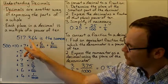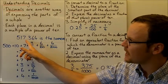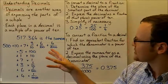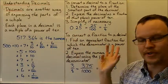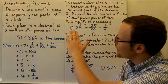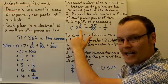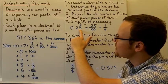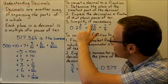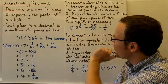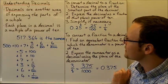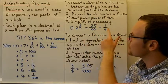We express the decimal as a fraction of that place's power of 10. For example, with 0.25, the smallest place value is the hundredths, so we express it as 25 over 100 — 25 hundredths. We can then simplify 25 hundredths to one quarter.